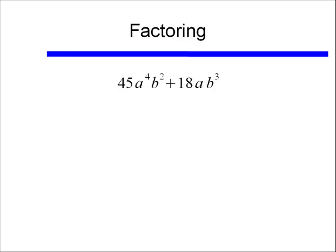Here's a review on factoring. If I had an expression such as 45a⁴b² plus 18ab³, if I wanted to pull out my greatest common factor, first I would have to completely factor both of these terms. So if I took my 45, well 45 is equal to 5 times 9, and I can further break that up as 5 times 3 times 3, so 45 completely factored is 3 times 3 times 5.